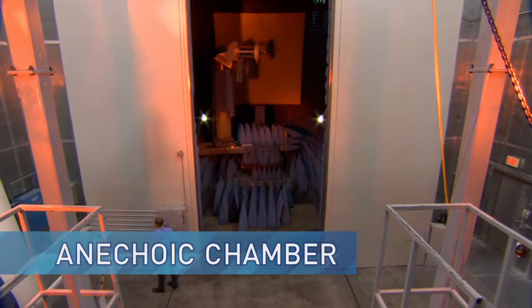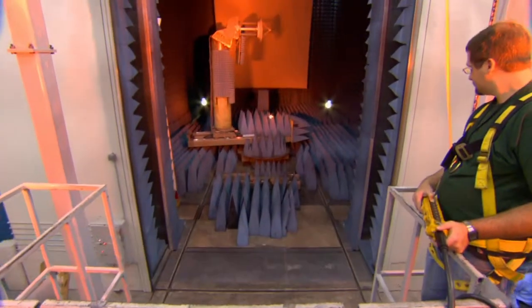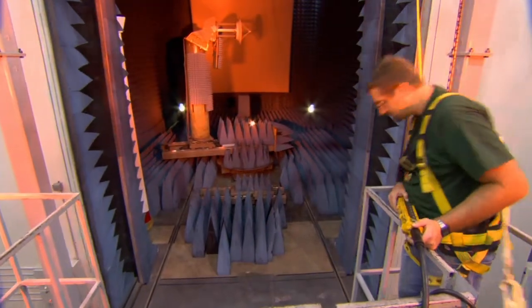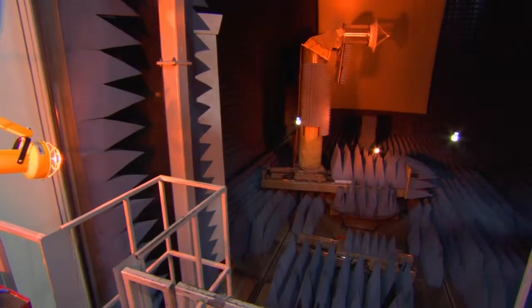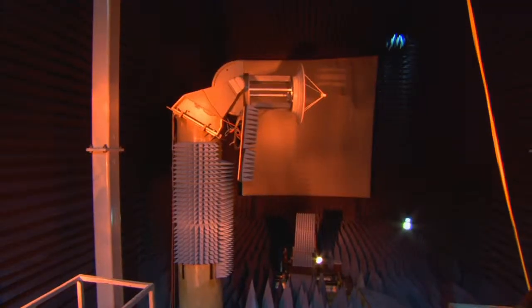So this is an anechoic chamber, and what this is is a giant shielded metal room where no outside electromagnetic waves can pass into it. Then we put absorber that brings down the ambient noise level in the chamber down to whisper quiet so that we can do very precise measurements on our antennas.